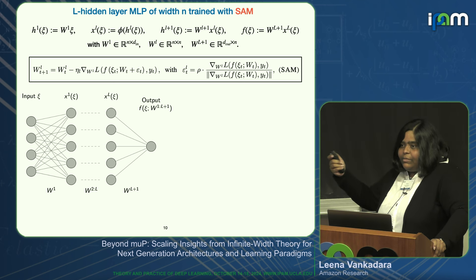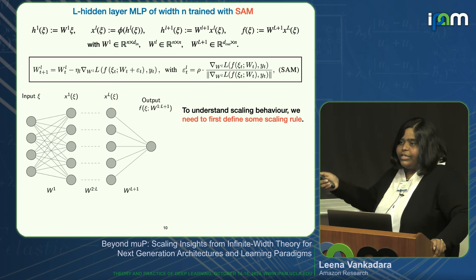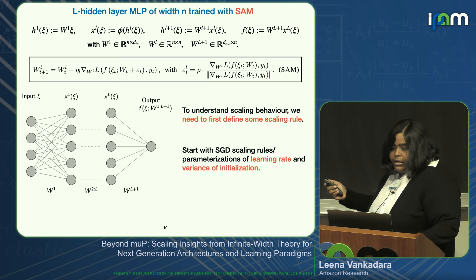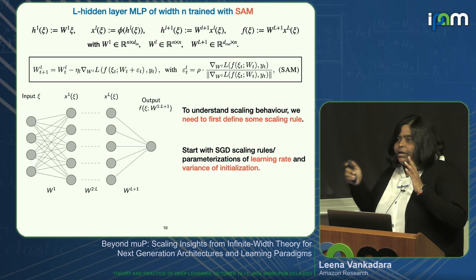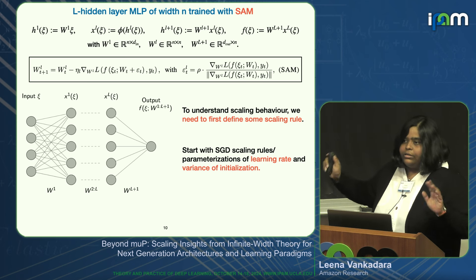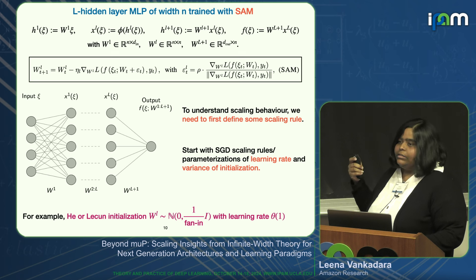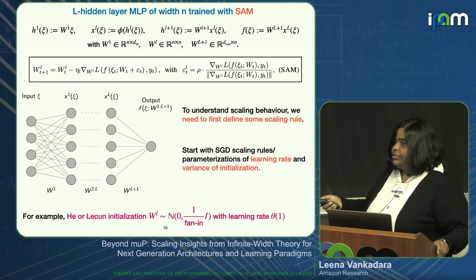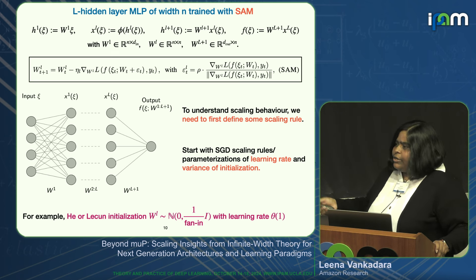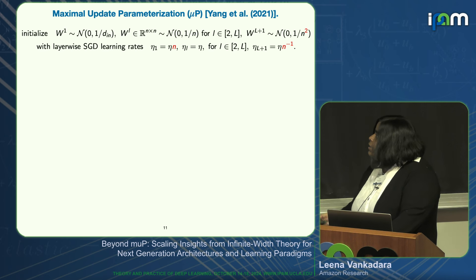One example is the standard or default parameterization used in practice for deep learning: LeCun initialization where variance scales as 1/N and a learning rate that's order-one. Another is the maximal update parameterization, MuP, which has gained a lot of attention recently for its practical benefits. MuP starts from standard initialization, scales down the learning rate and initialization of the last layer—transitioning from kernel regime to feature learning regime—then scales up the learning rate of the first layer to effectively learn features in every single layer.